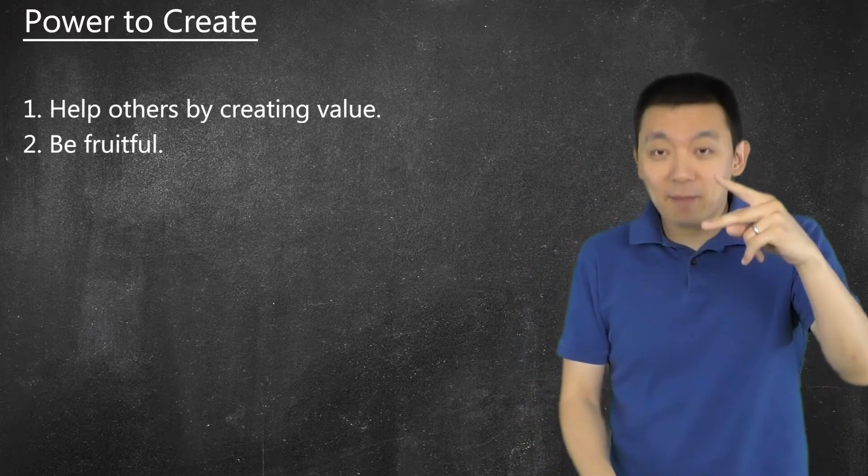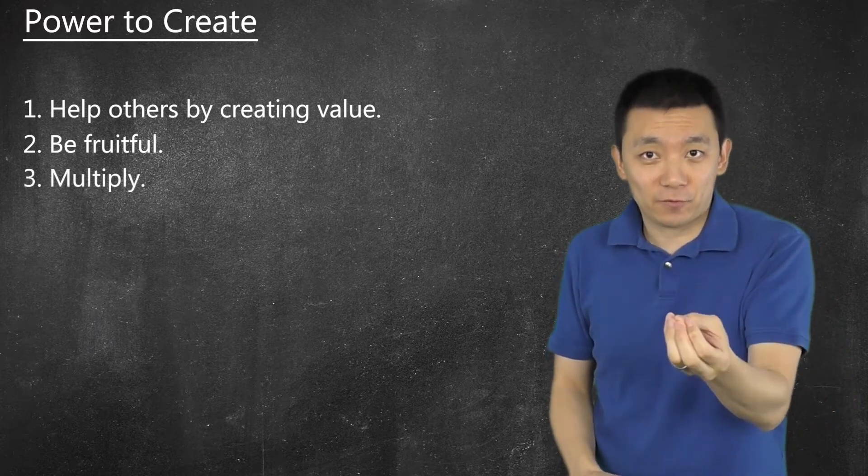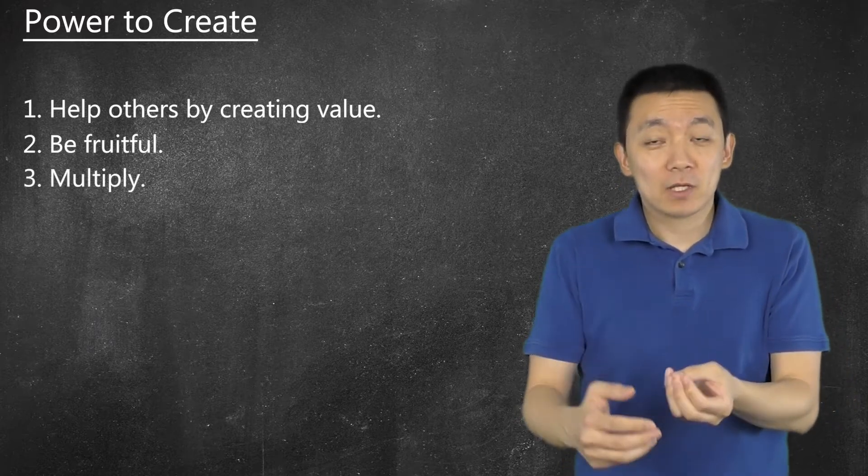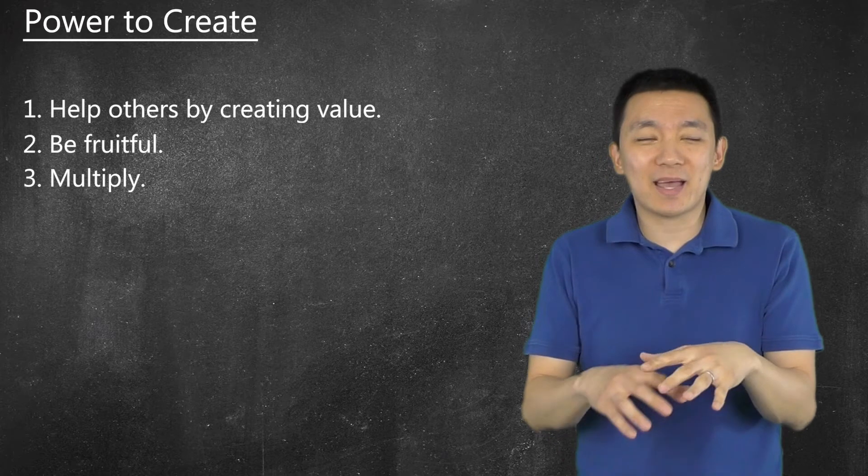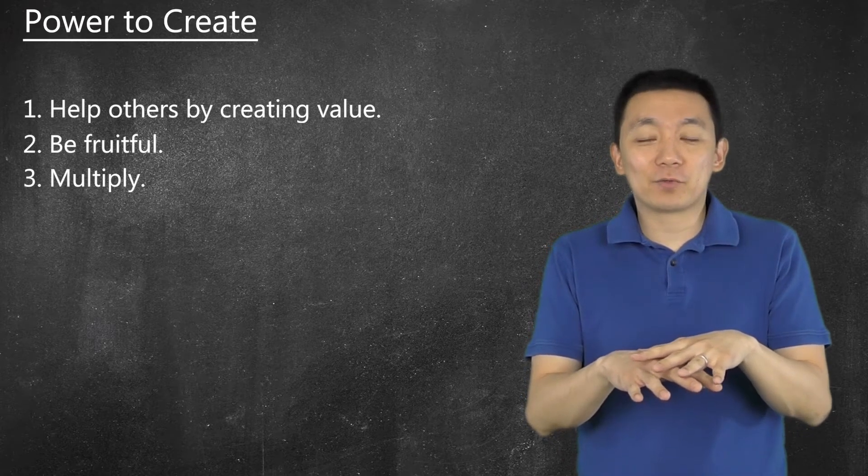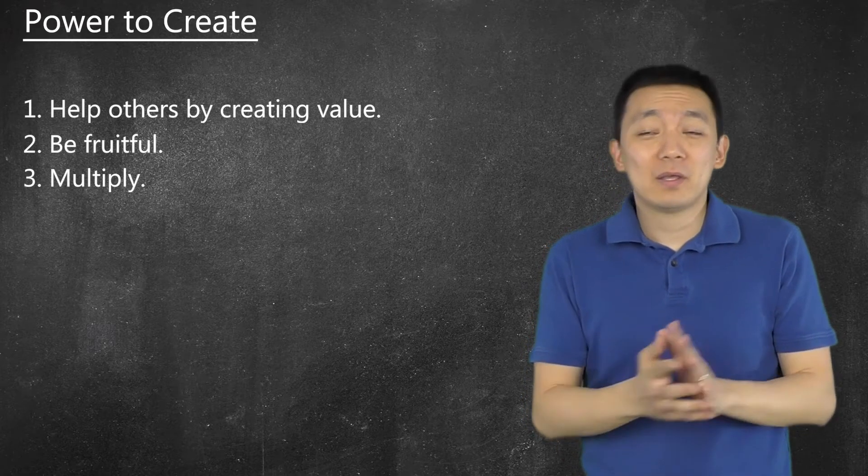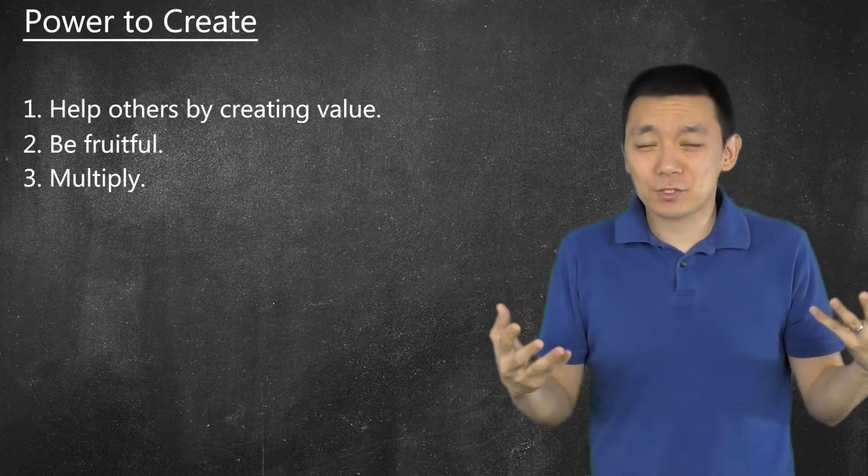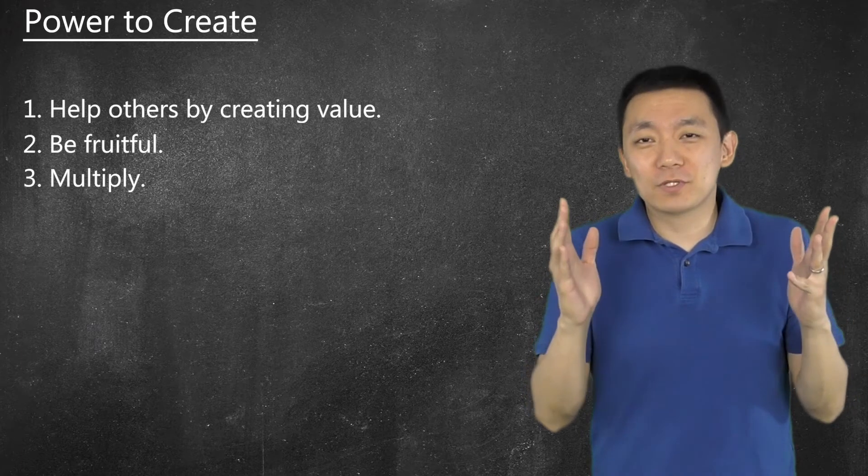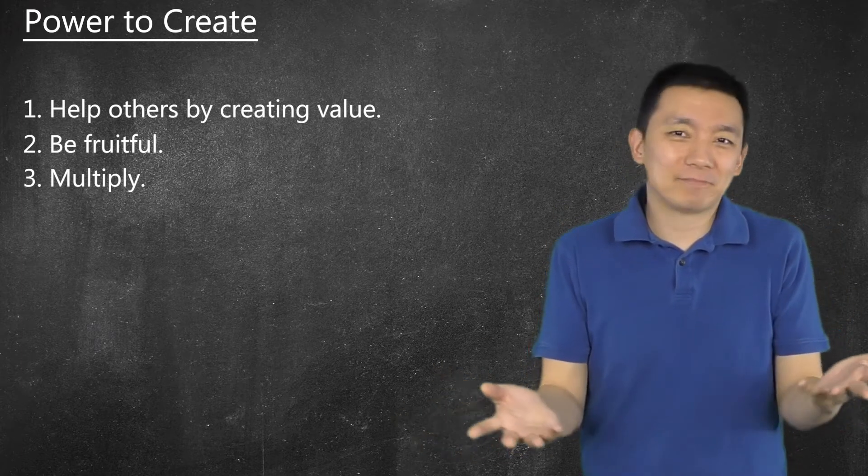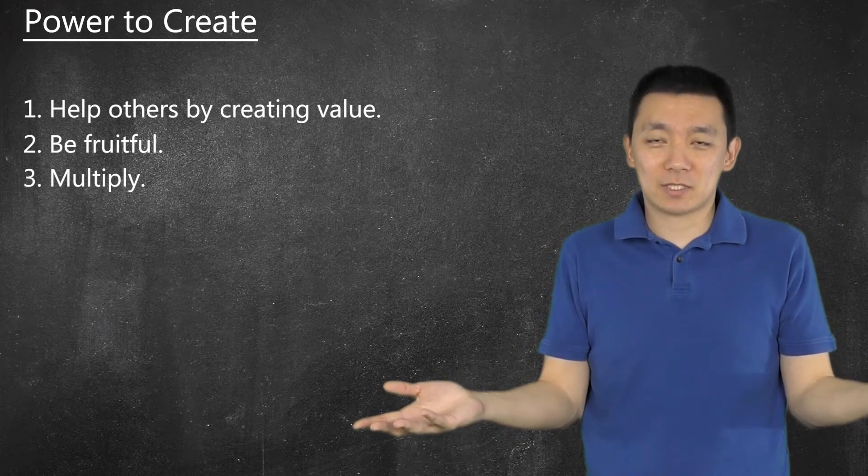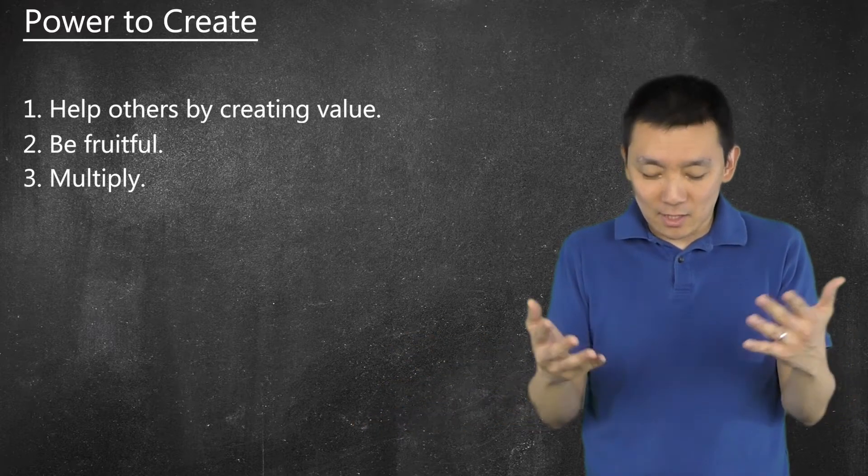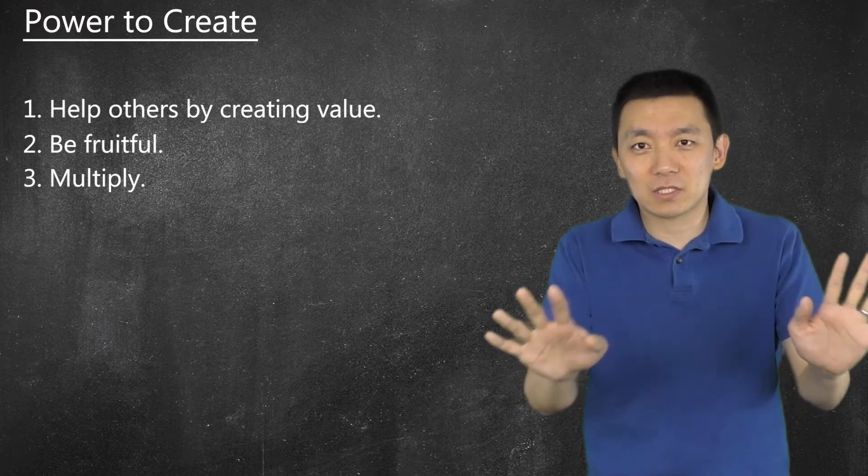Number two, be fruitful and multiply. First be fruitful, then you multiply. Because if you multiply something that is not really great, if you produce something subpar, if you produce garbage, and then you multiply it, it's not going to help anybody. Okay. It's not going to work most of the time, right? Obviously there's exceptions.